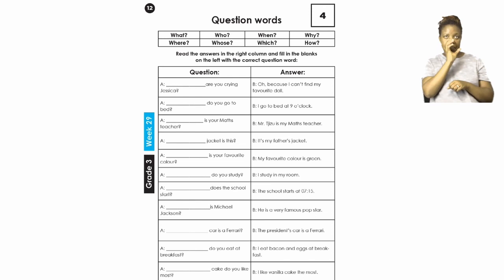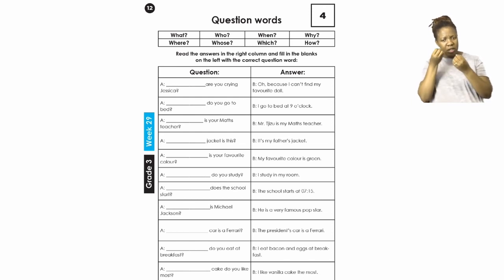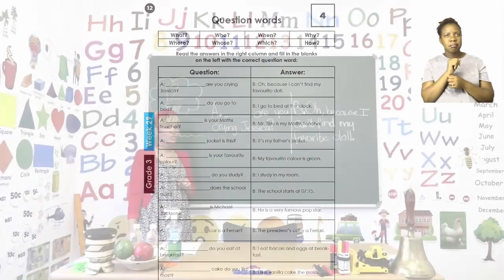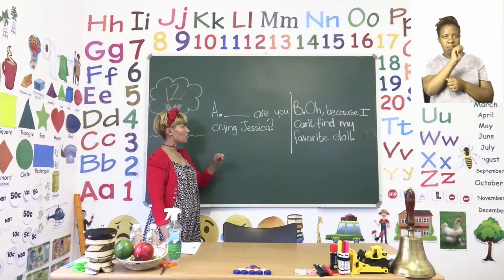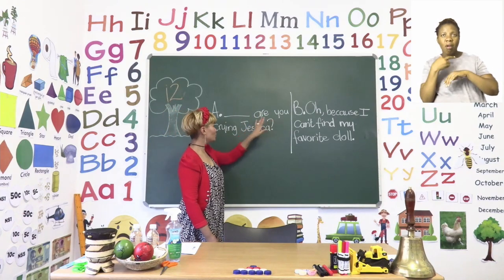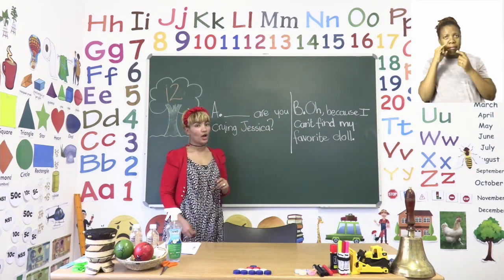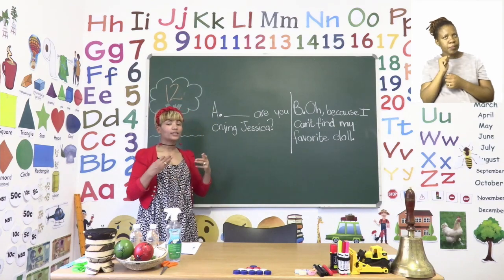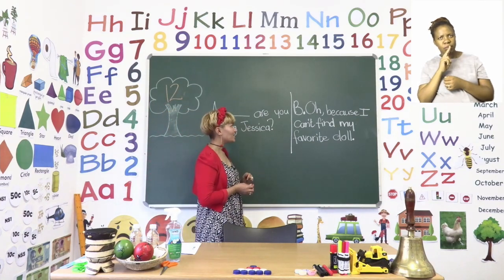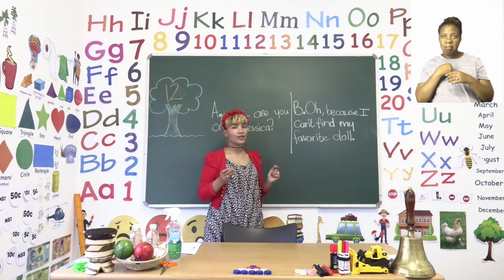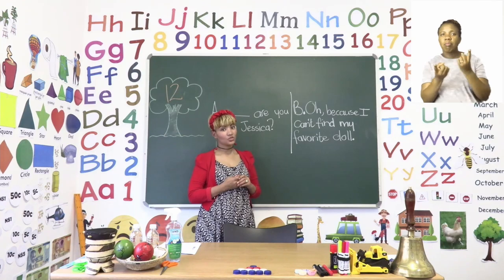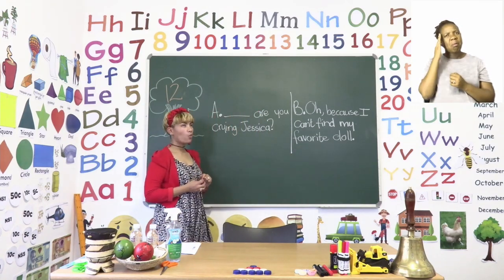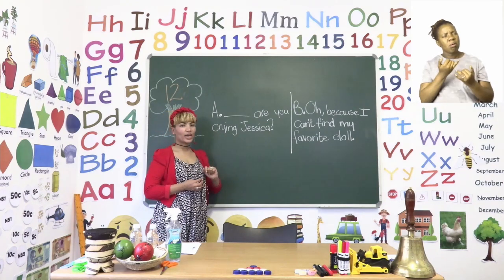You can also look at the answer to see which question word is the right one. Let's do the first one together. The blank space reads: blank space, are you crying, Jessica? So we have to find the right question word. Let's look at the answer: 'because I can't find my favorite doll.' Now that we know the answer, what question word do you think we have to write in at A?